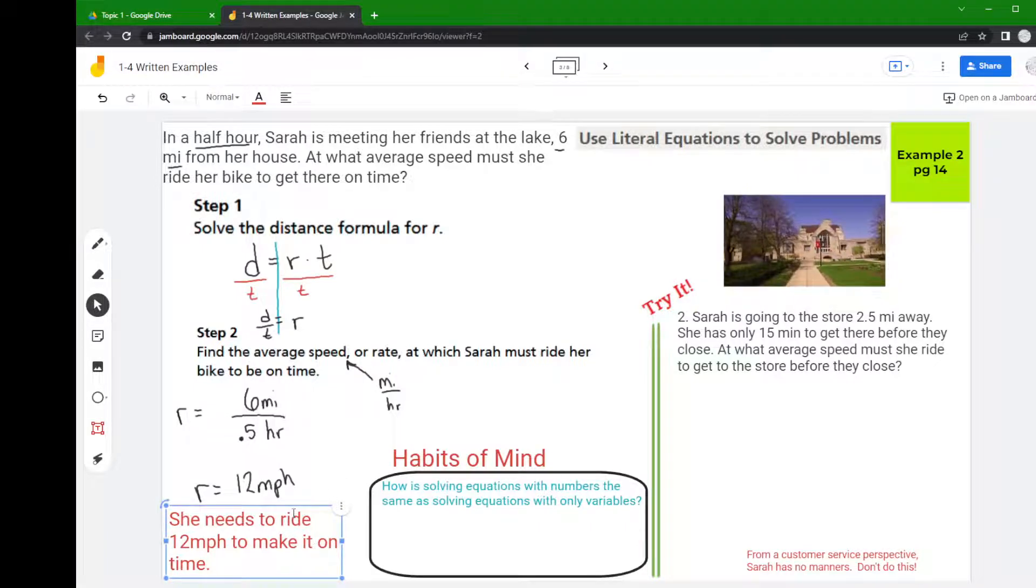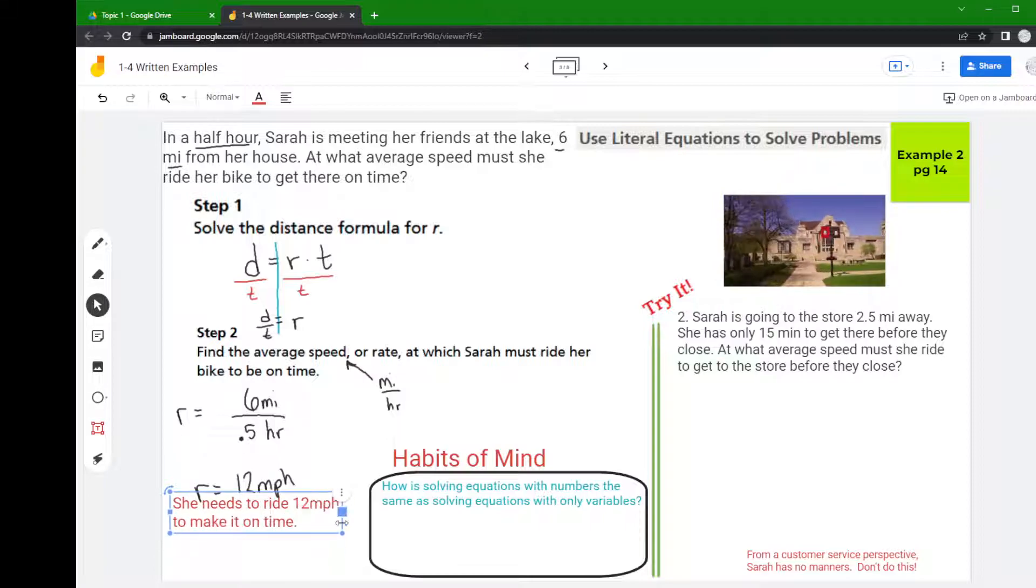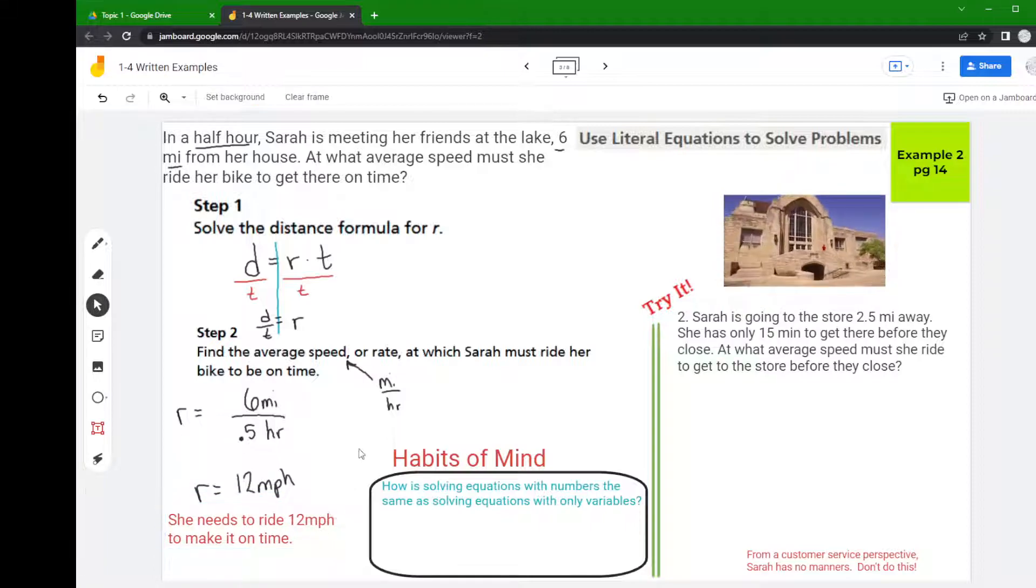There it is. I mean we all know that in real life she might want to travel a little faster than that. Yeah, I mean what if she has to wait for a car to pass at an intersection or she drops her water bottle or something like that, right?